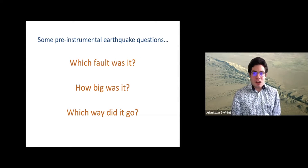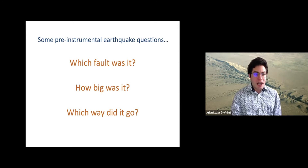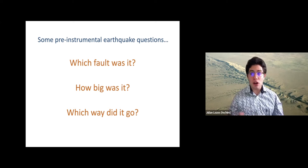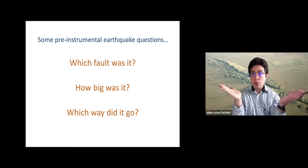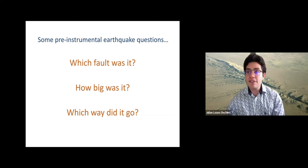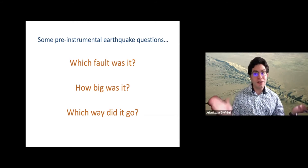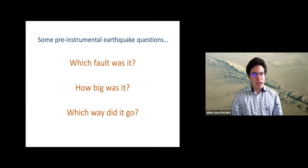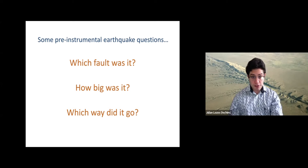Some of the questions commonly associated with pre-instrumental earthquakes in general: which fault was it — who done it? How big was it, and how strong was the ground motion really? Where were the end points of the rupture? And which way did it go — was there a directivity effect that's important to know about? These are kinds of questions that I've worked on with regards to different earthquakes in California's history.